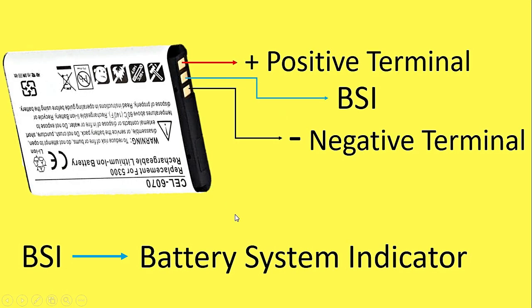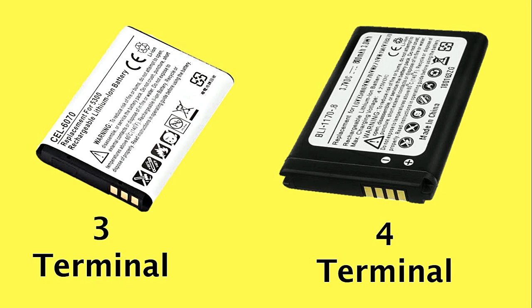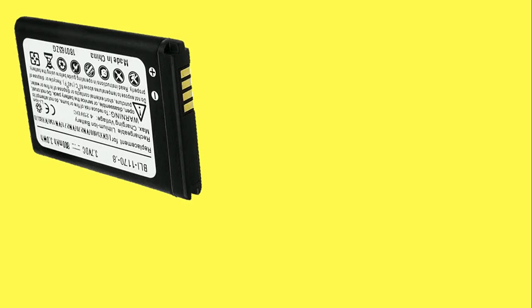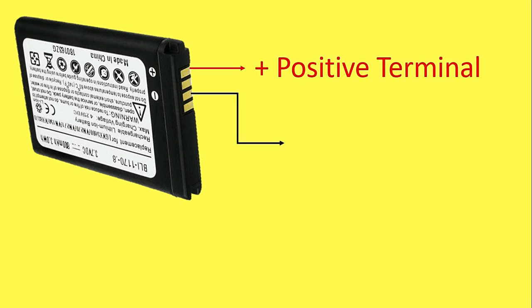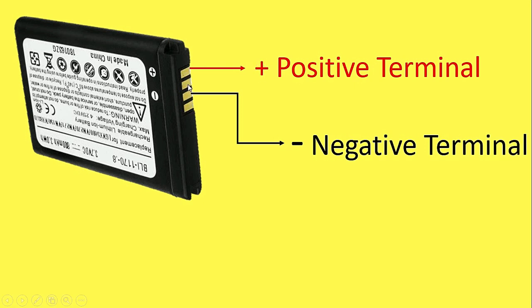Now let us look at a battery which has four terminals. In a four-terminal phone battery, two terminals are still the standard positive and negative terminals. The middle terminal is the BSI terminal, as already explained — it monitors the battery charge level.